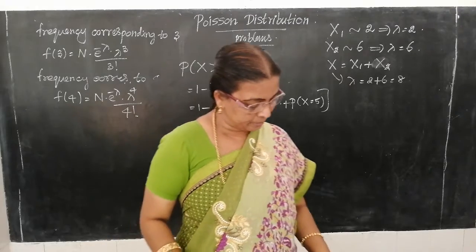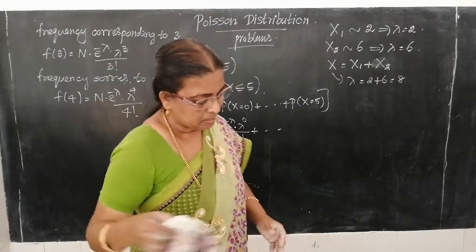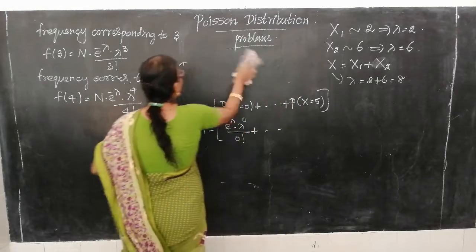Example 8.41. A Poisson distribution has a double mode at x = 1 and x = 2.